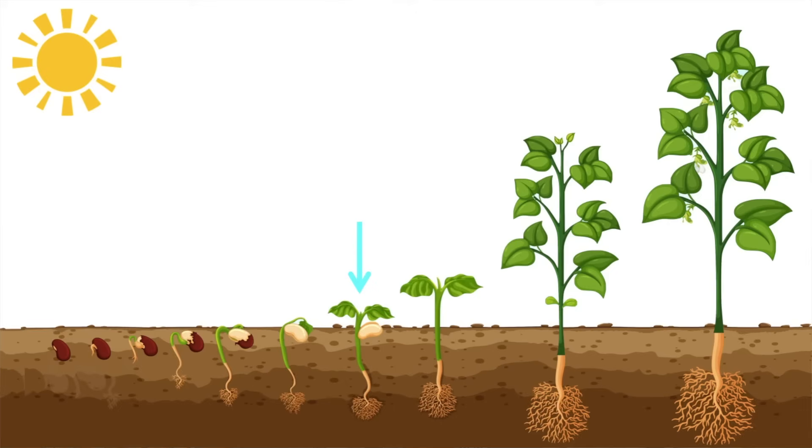Photosynthesis is the process in which carbon dioxide, water, and light energy produces oxygen and glucose. Once the roots and shoots are big enough to carry out the process of photosynthesis, the cotyledon falls off and becomes part of the soil.